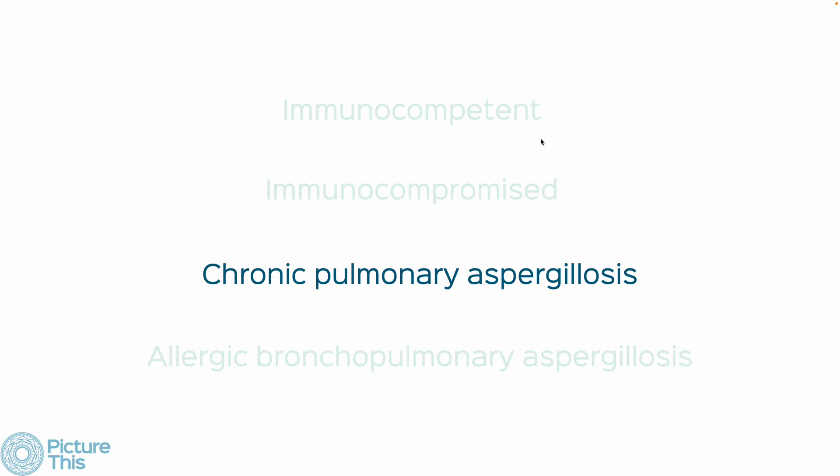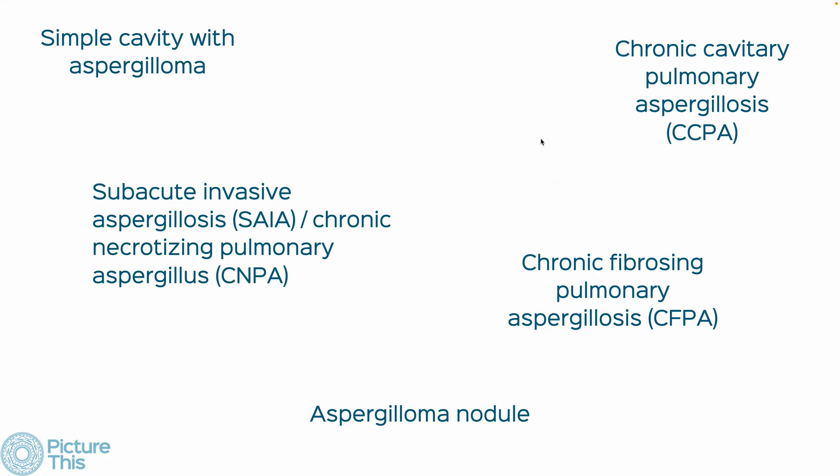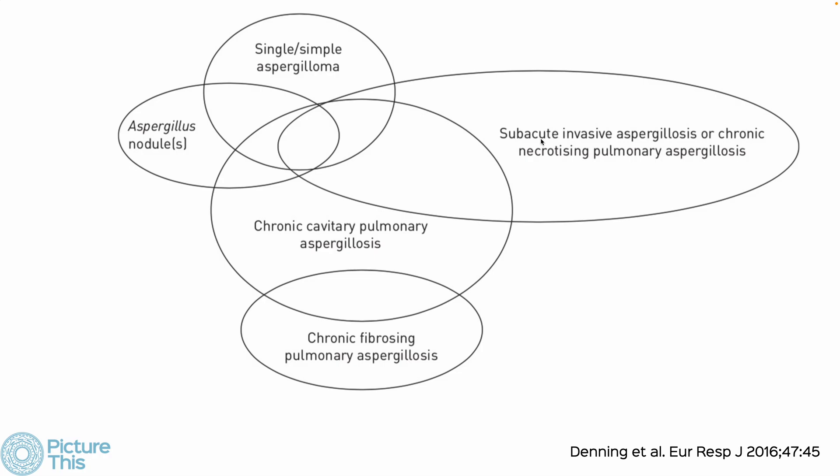Chronic pulmonary aspergillosis, or CPA — which is different from ABPA and different from invasive aspergillosis — is a condition where there is colonization of preexisting cystic areas, typically with Aspergillus, forming a ball-like structure. There are five described conditions that can coexist and intersect.